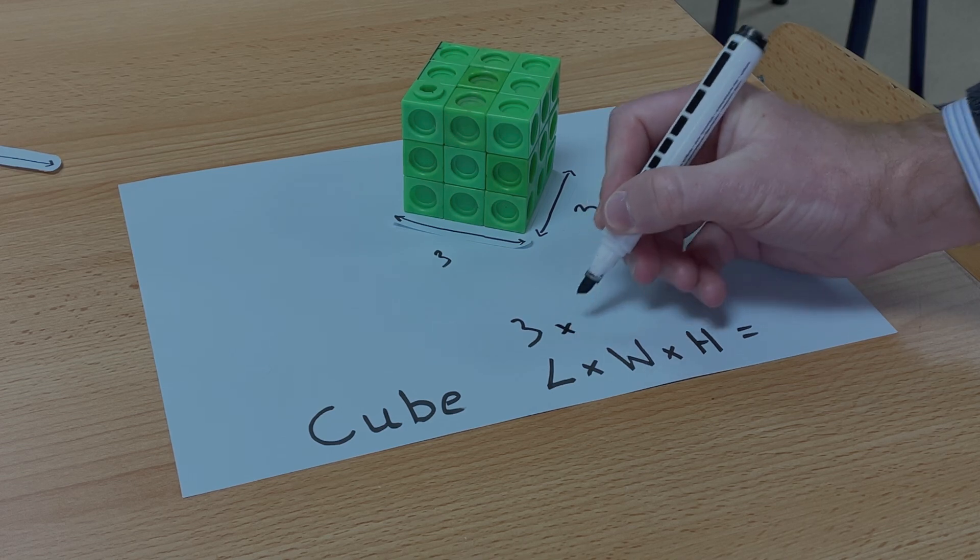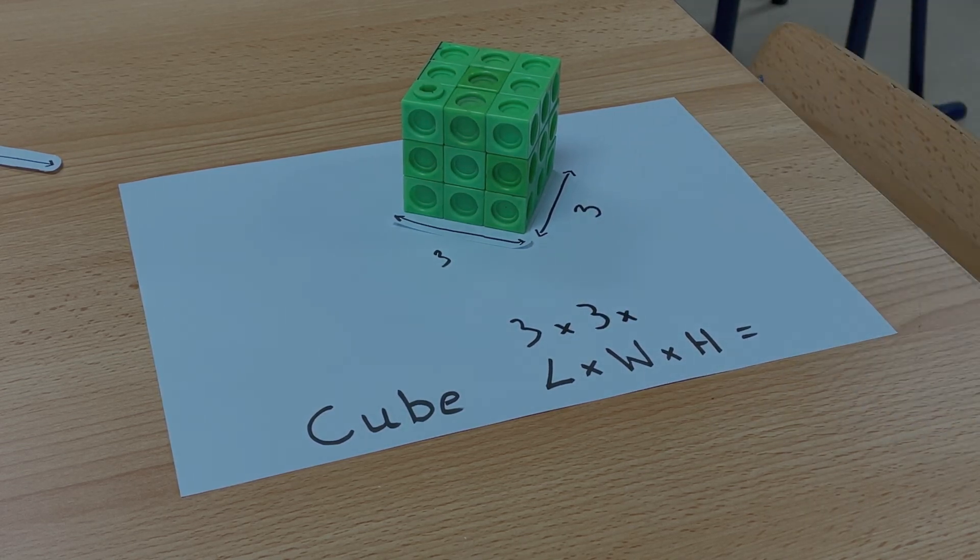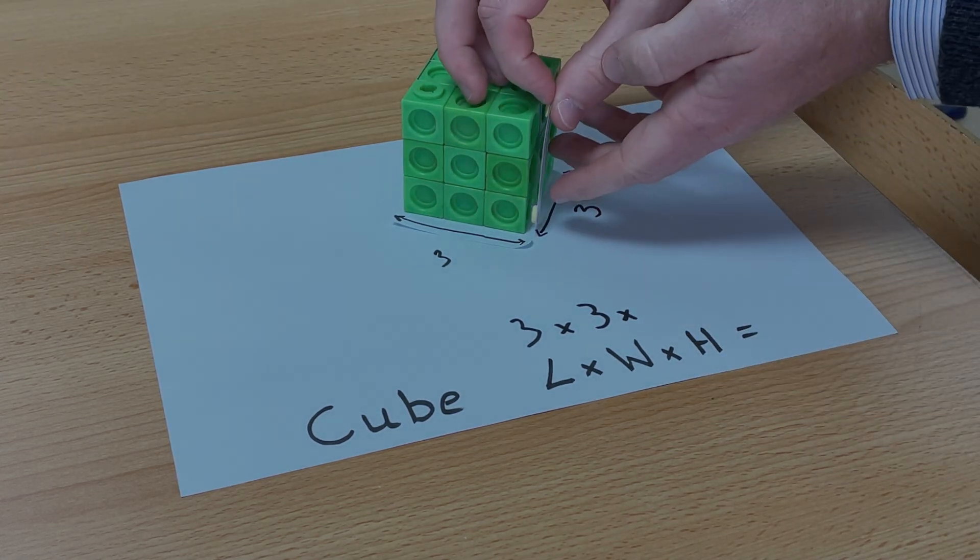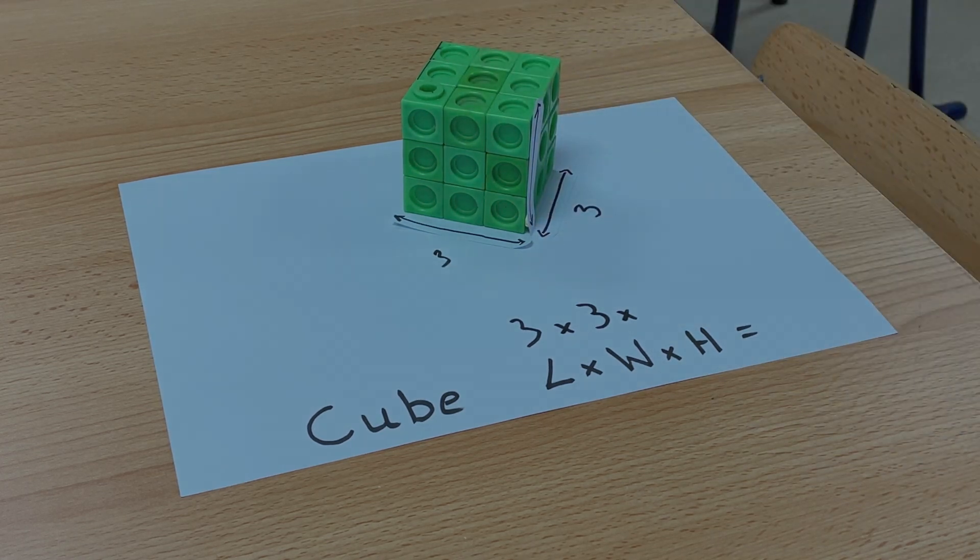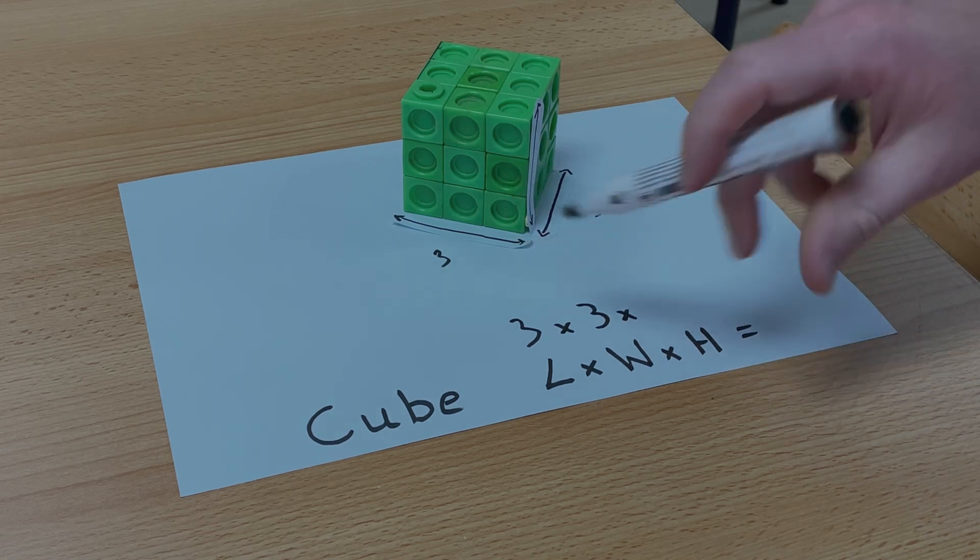So I need to multiply the length by the width. And the height, because it's a cube, is exactly the same as the length and the width. So the height, you can see here, is 1, 2, 3.